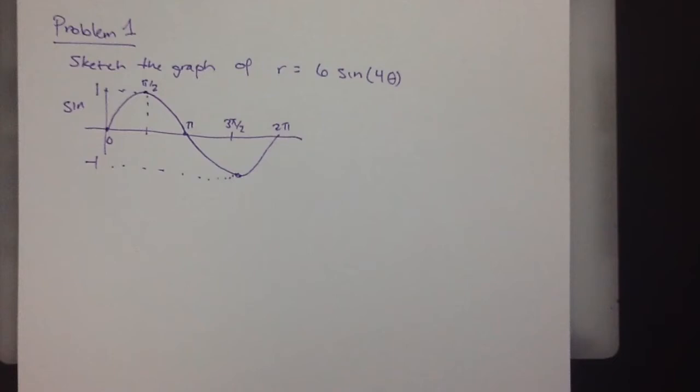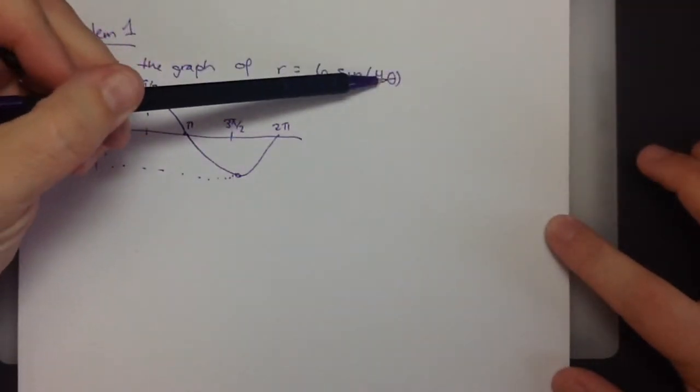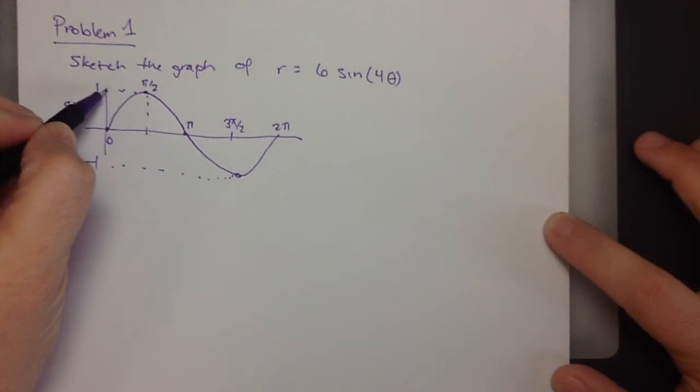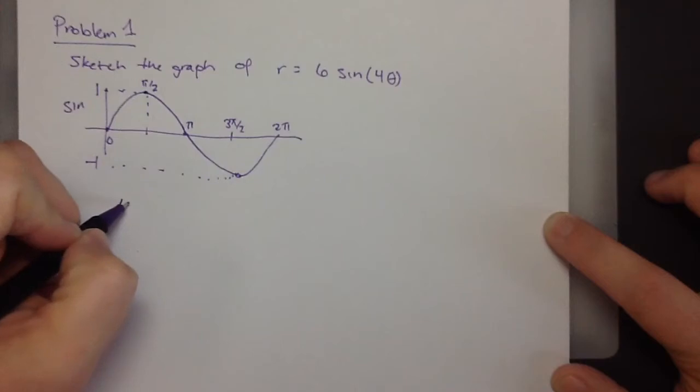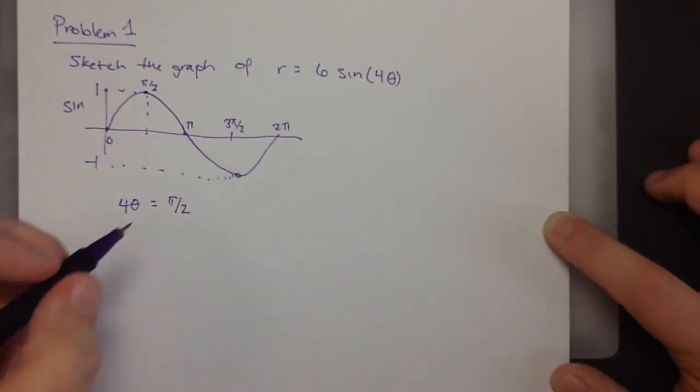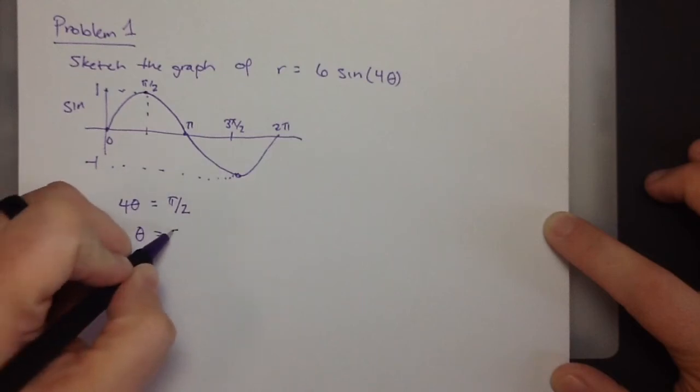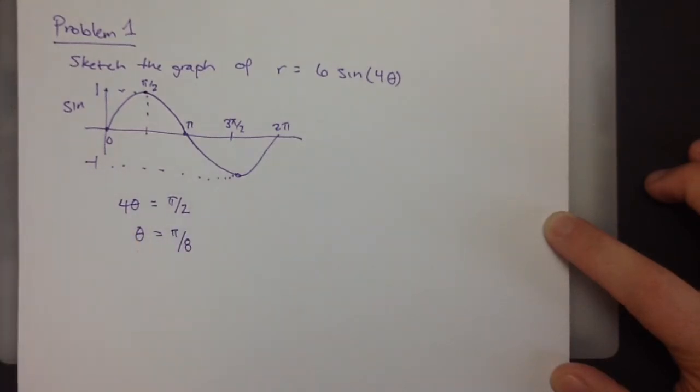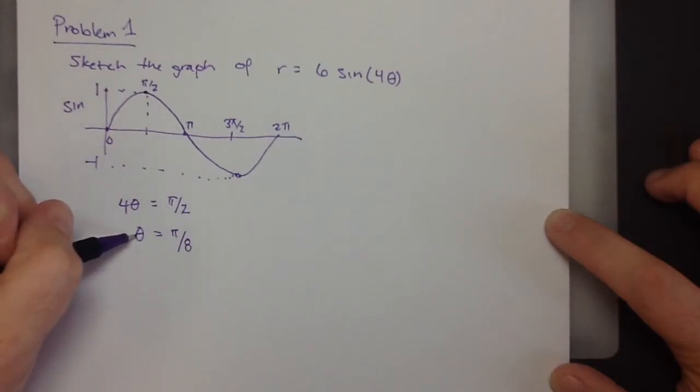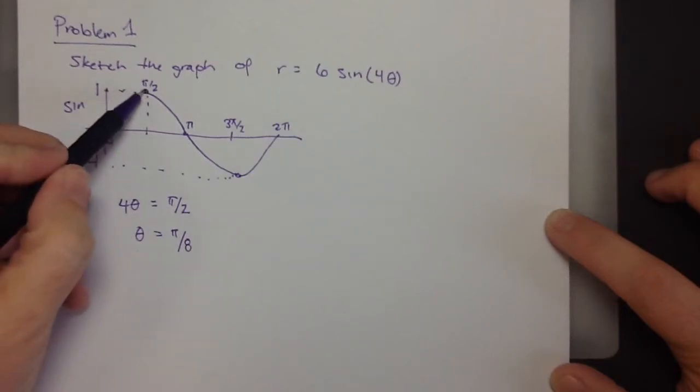So, we're going to be trying to look for arguments of theta that line up with this. When does this equal positive 1? At pi over 2. So, when does 4 theta equal pi over 2? Well, that's any time that theta is pi over 8.